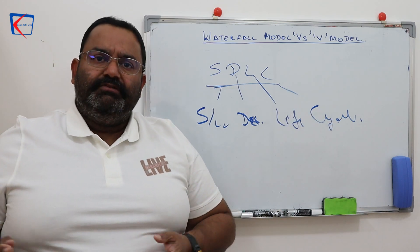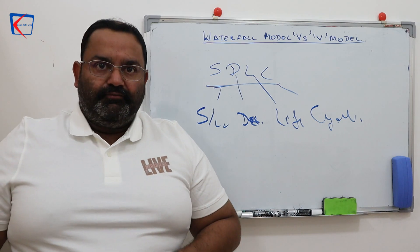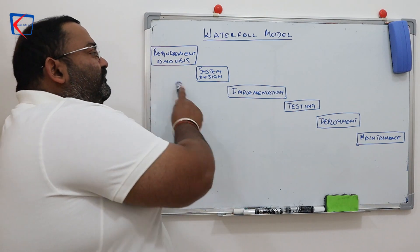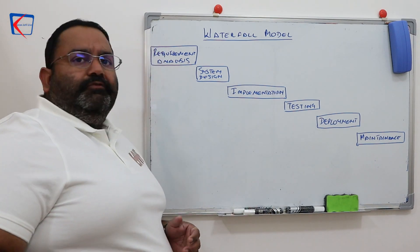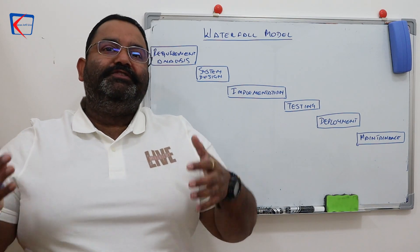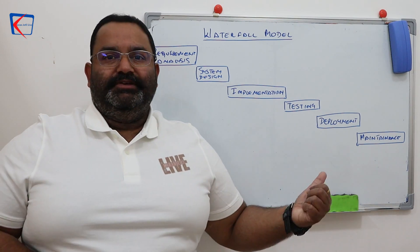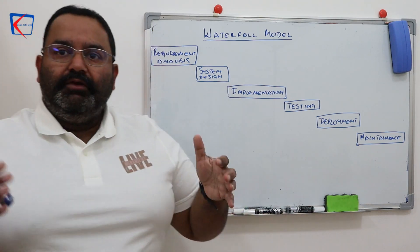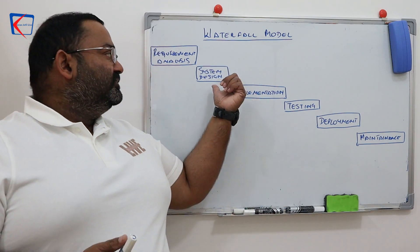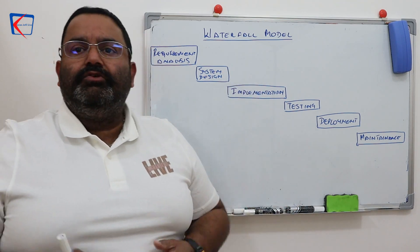Now let us come to the first model, the waterfall model. These are the different stages of the waterfall model. The first one is requirement analysis, in which you study what the user wants and examine in detail what the present system is doing, how it is doing it, and what problems exist. In the second stage, whatever problems you identified in the first stage, you try to solve them using system design.